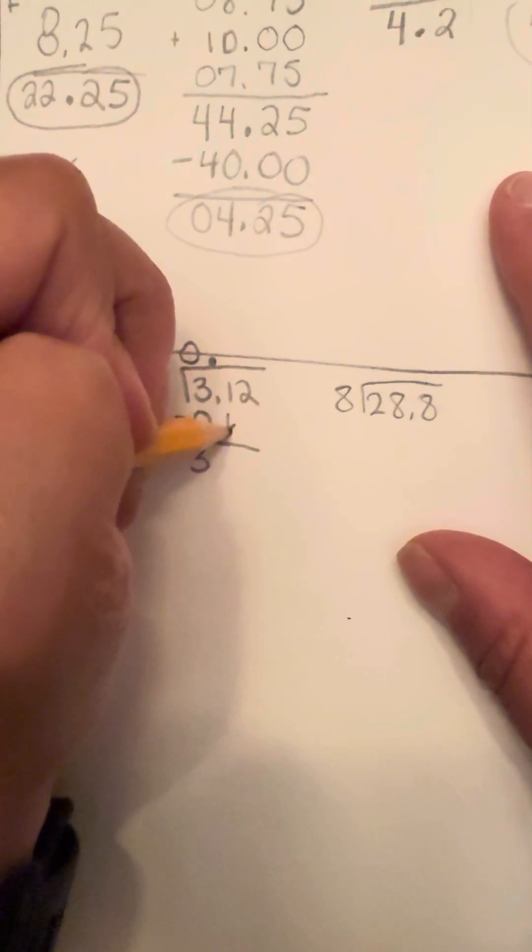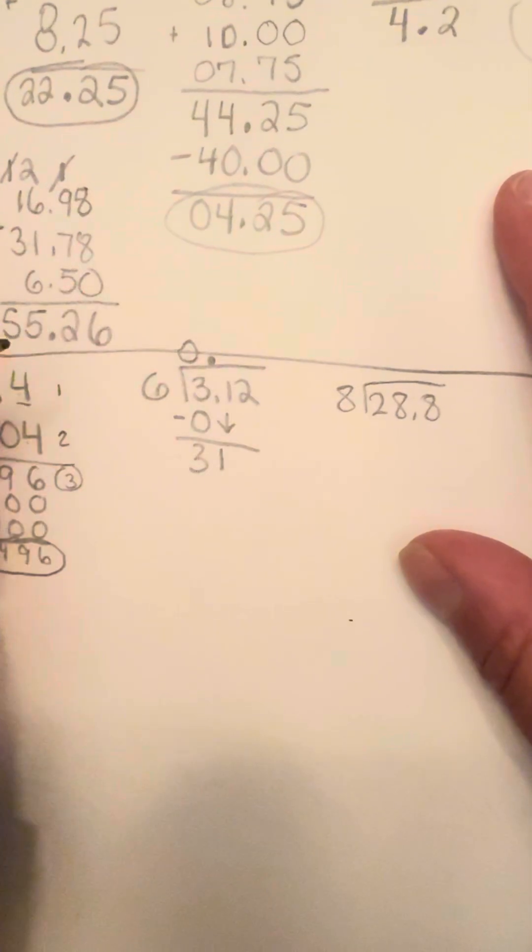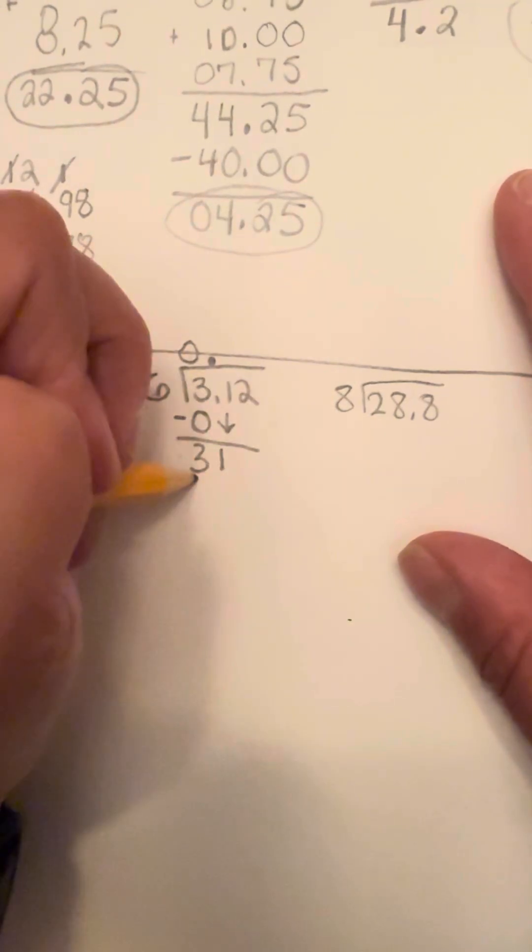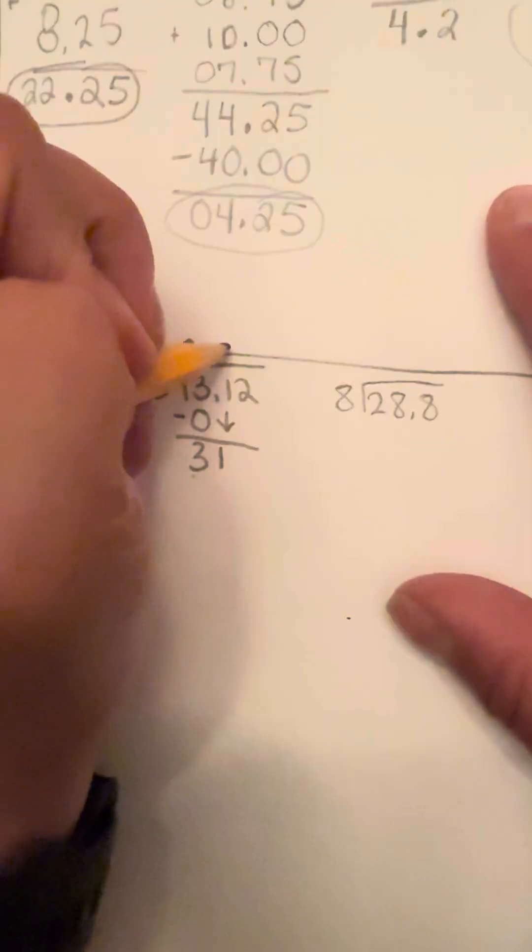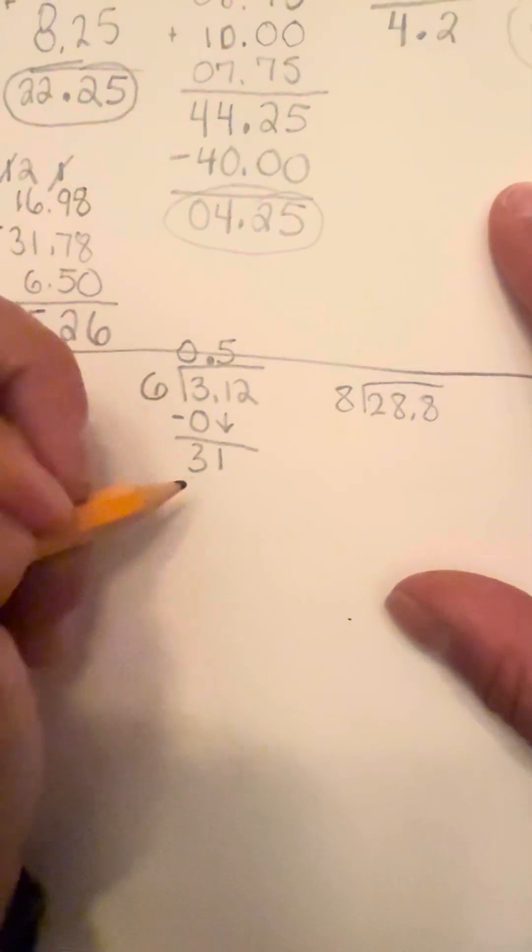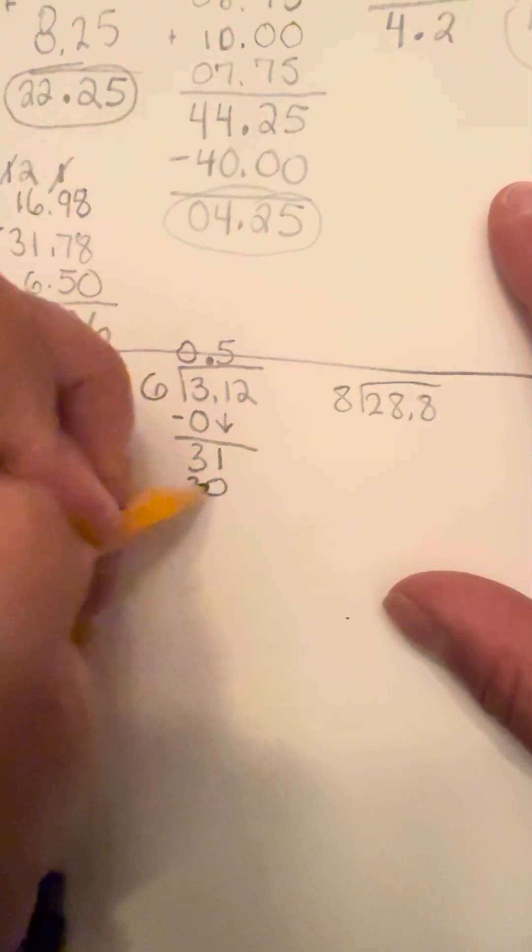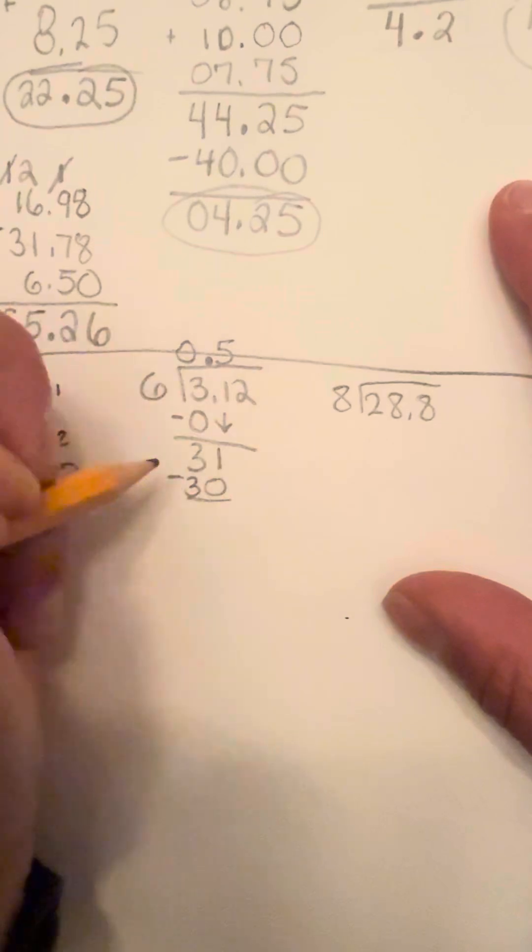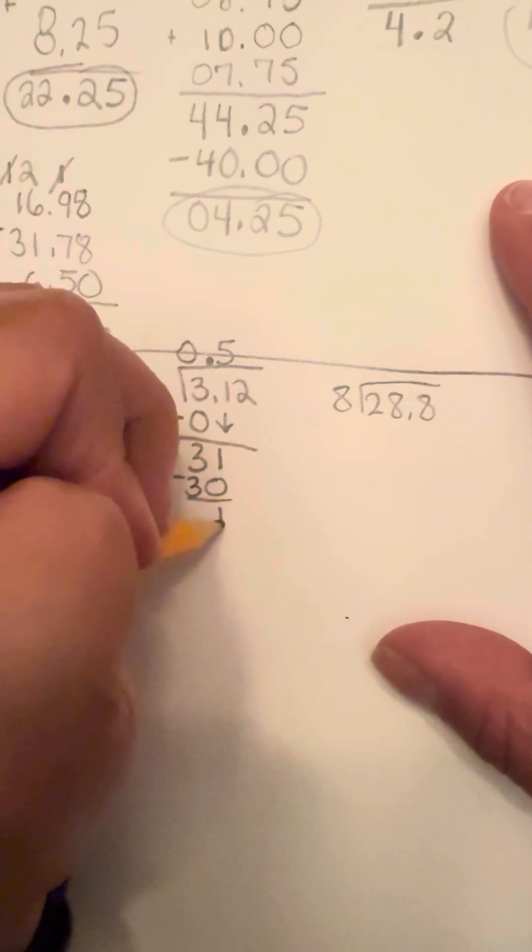And now I'm going to move that one down to that line with it. And now I'm going to see what goes into 31. Six can go into 31 five times without going over. And that's going to be six times five is 30.